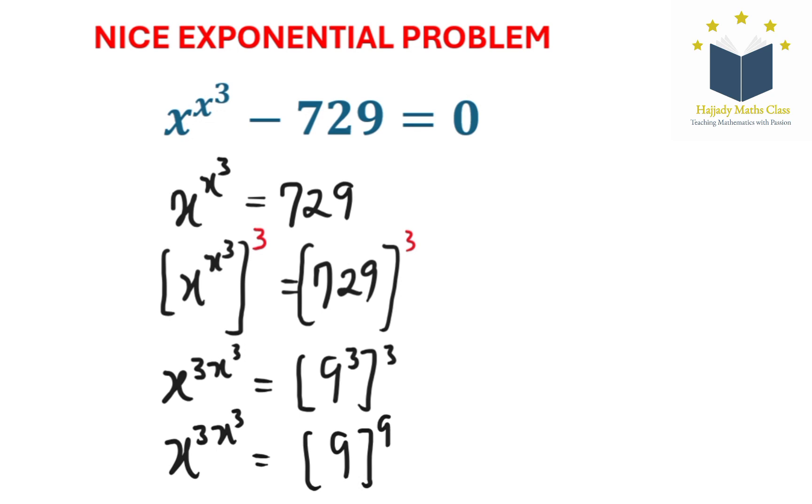Then proceeding to the next step here, I can write this. Since we have that x to the power of 3 is the same thing as 9, that is by looking at this, x to the power of 3 is the same thing as 9. So I can work with x to the power of 3 equals 9.